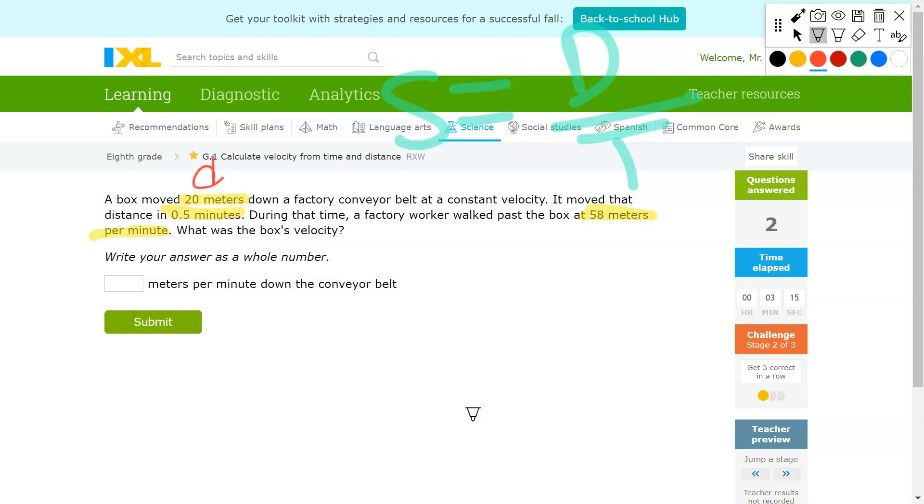0.5 minutes, that would be your time. 58 meters per minute is actually a speed unit, so we're going to ignore that unit.